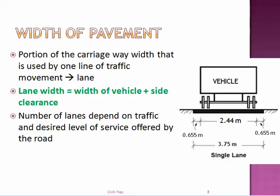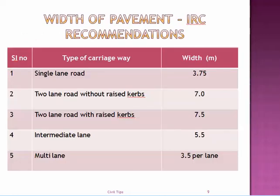The third element is the width of the pavement. The width of a single-lane road mainly depends on the width of a vehicle. The one-lane width equals the width of the vehicle plus some clearance on both sides. The standard width of a vehicle per IRC is 2.44 meters, with clearance provided on both sides, making the total single-lane width 3.75 meters.